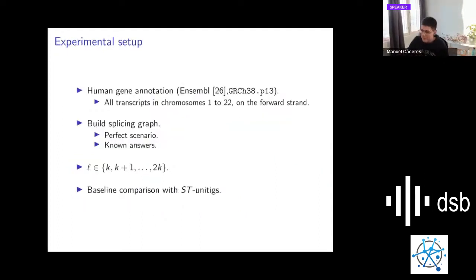Now I'll tell you about our experiment. We work with human gene annotation with all the transcript information from chromosome 1 to 22 on the forward strand. This means that we already know the answer. We have the transcripts, which are the positions of transcripts in the genome, and we also know what are the corresponding exons. So we know the answer. That's why this is a perfect scenario, because we don't consider errors and we already know the answer.